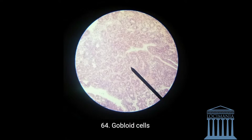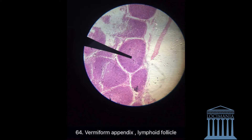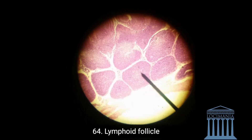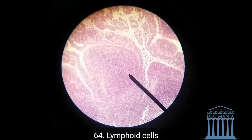Here we have the lymphoid tissue. It is characteristic in that it is surrounded by the epithelium — simple epithelium characterizes the lymphoid tissue. We also have some lymphoid cells here and some connective tissue.